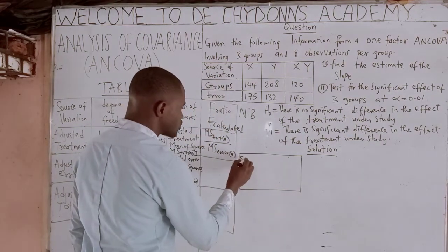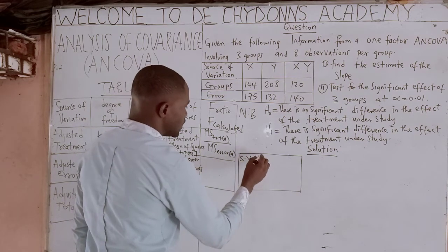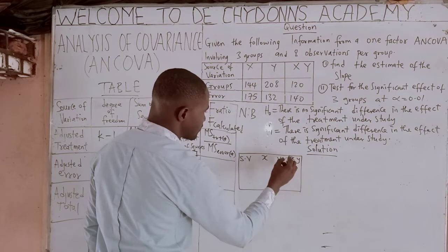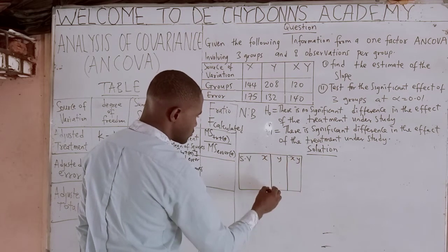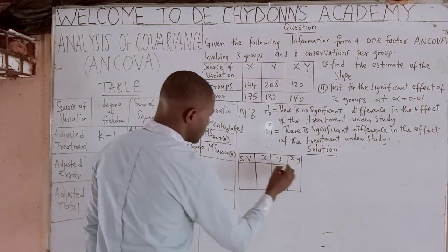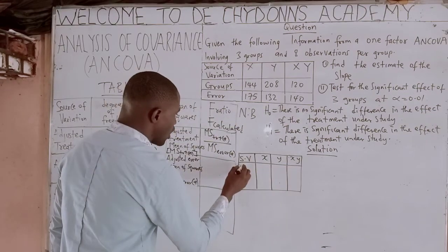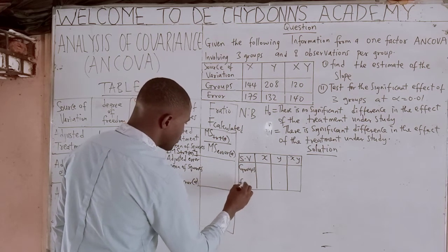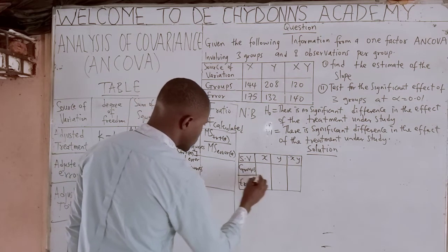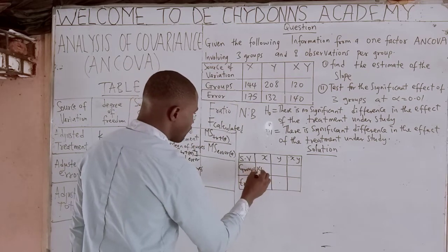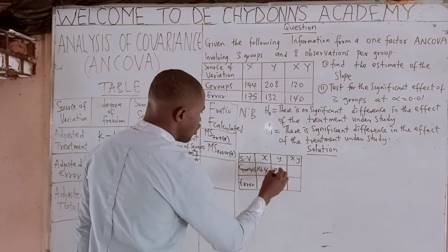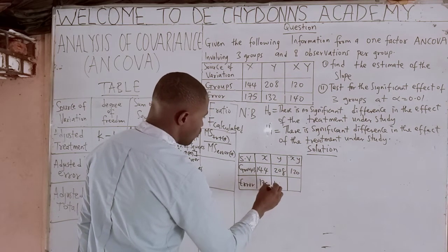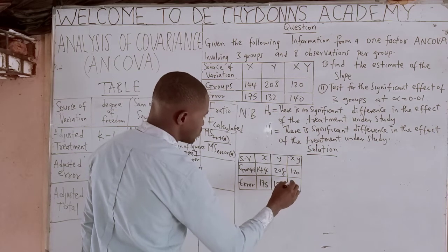The source of variation columns are: X, Y, and XY. Then for groups, we have: 144, 208, 120. For error, we have: 175, 132, 140.